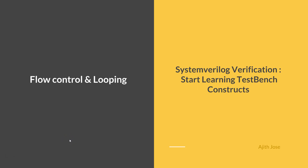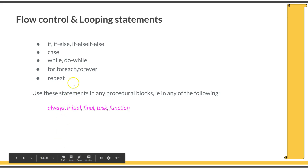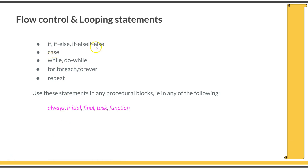In this video, you will be learning different flow control and looping statements in SystemVerilog. These are the list of flow control and looping statements: if, if-else, if-else-if, if-else-if-else, case, while, do-while, for, foreach, forever, and repeat statements. These are pretty simple to understand and the syntax is very similar to those in C. We will quickly go through them to understand how to write these statements in procedural blocks. Remember that these should only be used in procedural assignment blocks such as always, initial, final, task, or function.